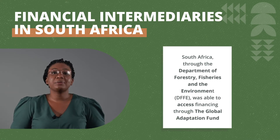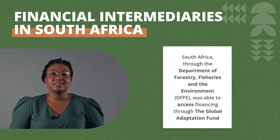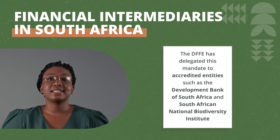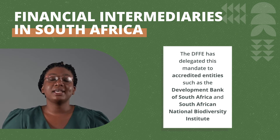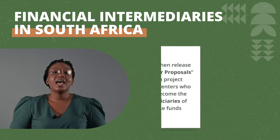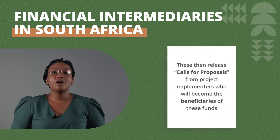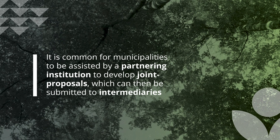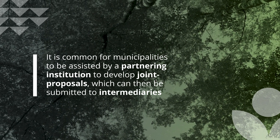South Africa, through the Department of Forestry, Fisheries and the Environment, or DFFE, was able to access financing through the Global Adaptation Fund. DFFE delegated the responsibility of disbursing these funds to accredited entities, namely the Development Bank of Southern Africa and the South African National Biodiversity Institute. These accredited entities released calls for proposals from project implementers who would become the beneficiaries of these funds. Municipalities were expected to apply to access this climate finance, and it is common for municipalities to be assisted by partnering institutions to develop joint proposals, which can then be submitted to intermediaries.